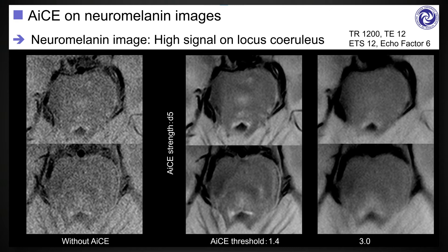Neuromelanin imaging is one of the challenging techniques to visualize neuromelanin in the locus coeruleus, which is a very small structure in the dorsal part of the pons. On the image without AICE noise reduction, a large amount of noise disturbs the small signal of the locus coeruleus. By selecting adequate AICE noise reduction, we can get a satisfactory image of the locus coeruleus. However, we have to be careful that if we select an inadequate threshold of AICE, the image would be blurred and visualization of the structure would be spoiled.